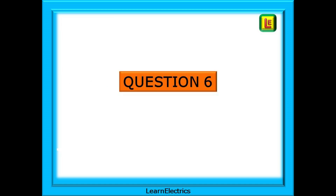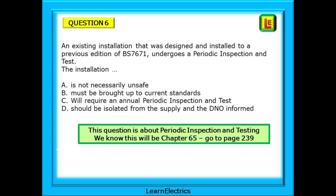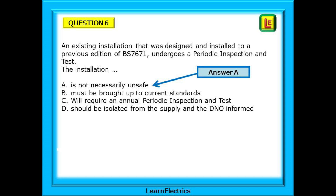Question 6: an existing installation that was designed and installed to a previous edition of BS 7671 undergoes a periodic inspection and test. The installation — and four possible statements to complete the sentence. This question is about periodic inspection and testing, which is chapter 65. Going to page 239 to find the answer, lots of useful information is often tucked away in notes and small print — they make excellent question material for exam setters. Regulation 651.2 note 2 gives us the answer. Our answer choice is A: is not necessarily unsafe.